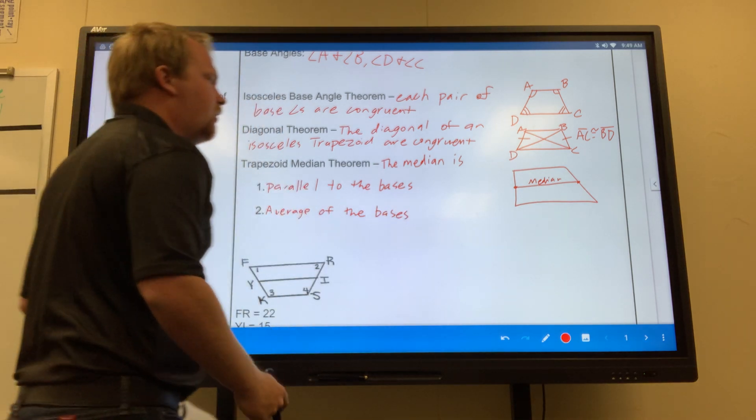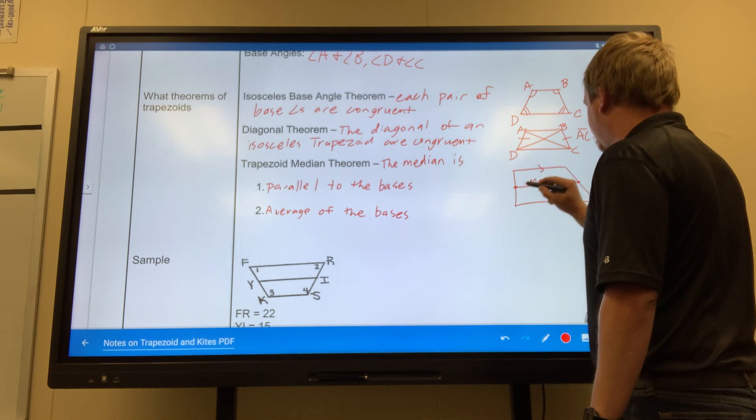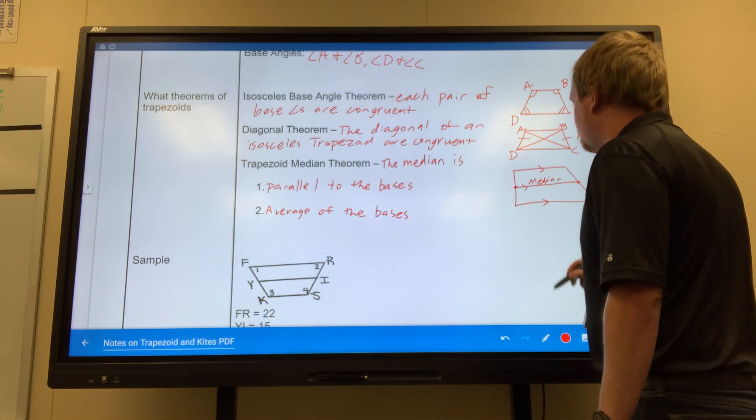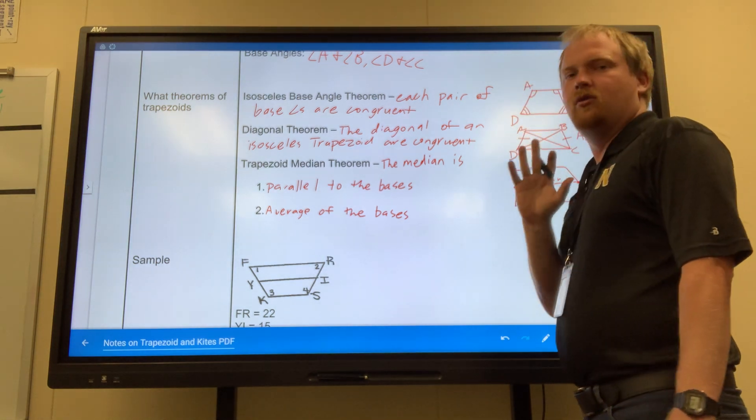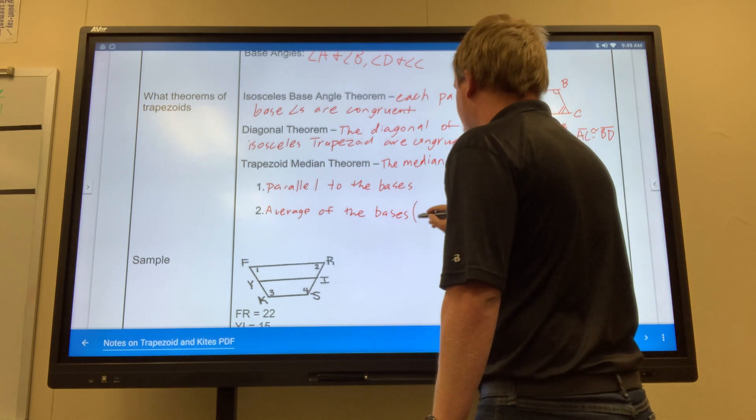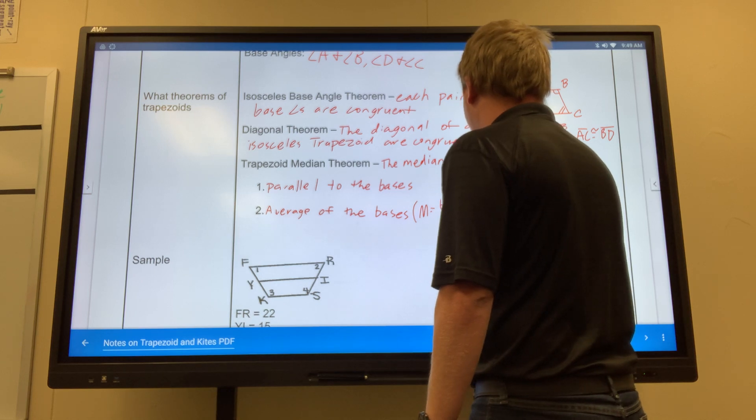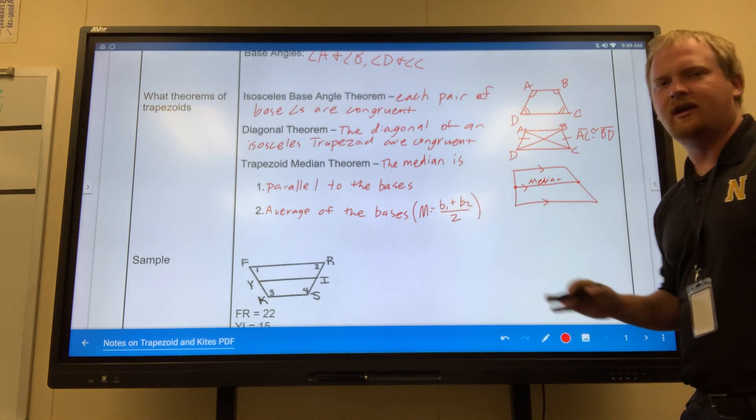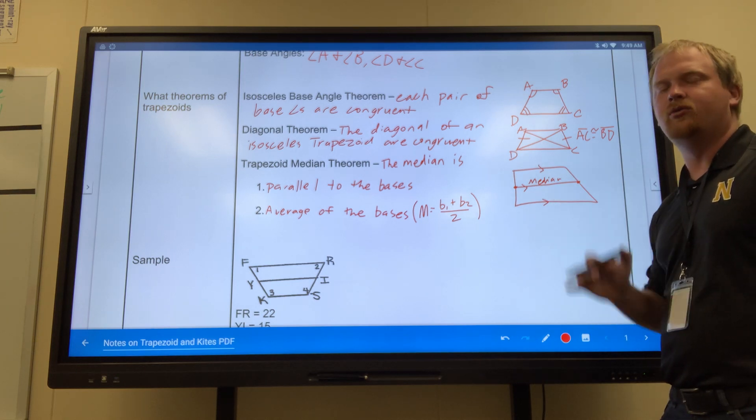So not only am I saying that this is parallel, but we can also find that this is the average. Now, a simpler way of looking at it is say M equals median, base one plus base two, over two. That's the easiest way to look at it.